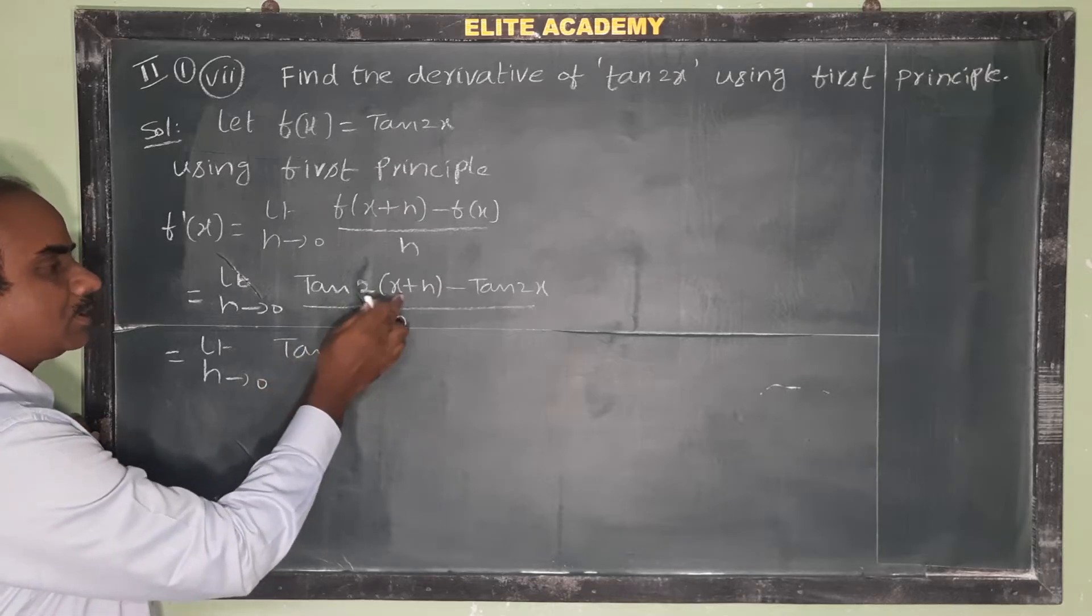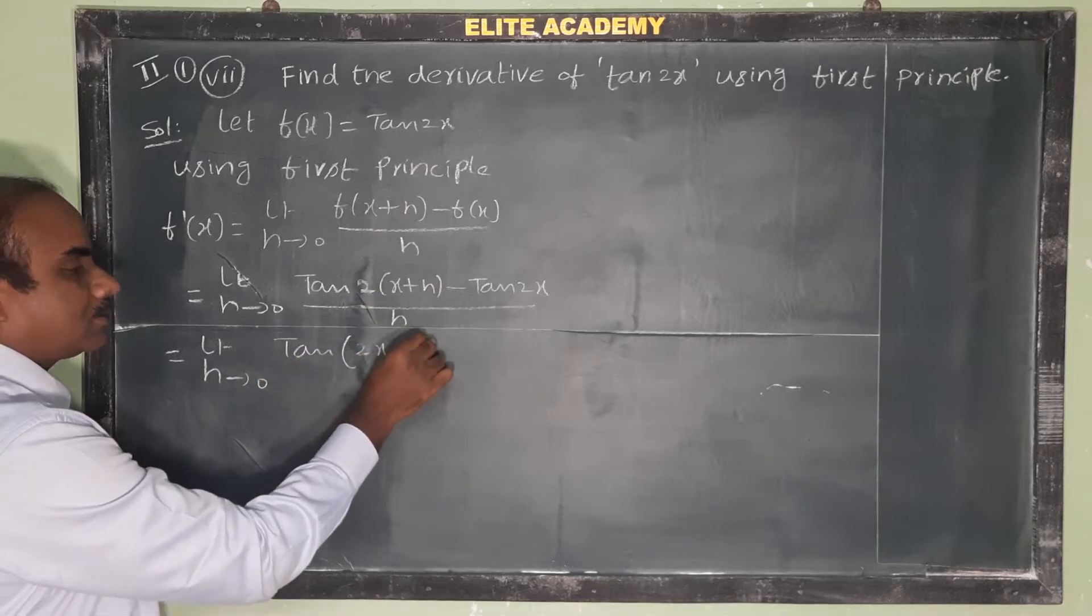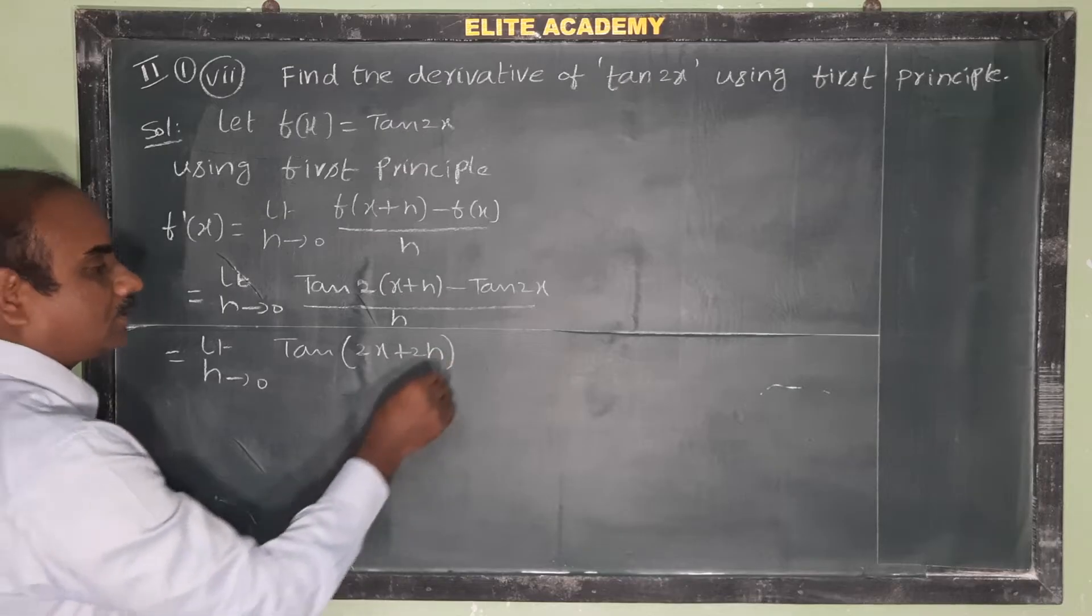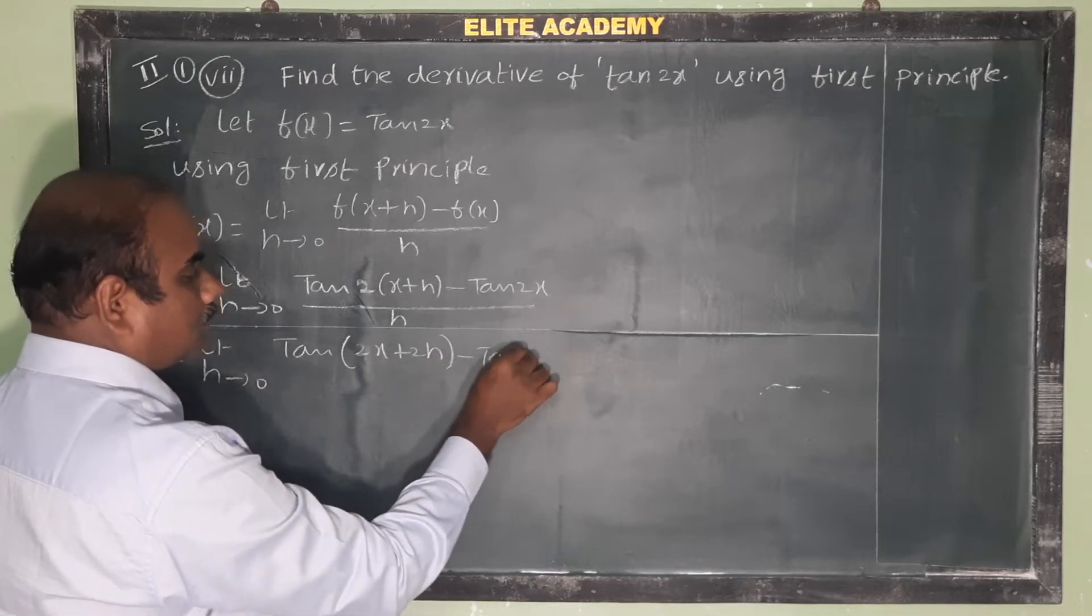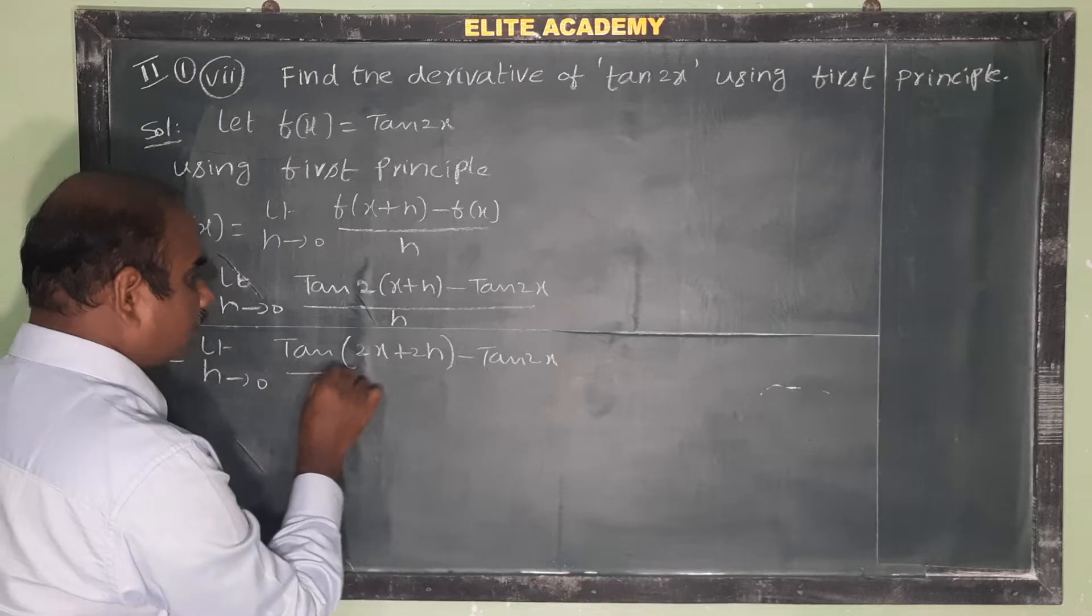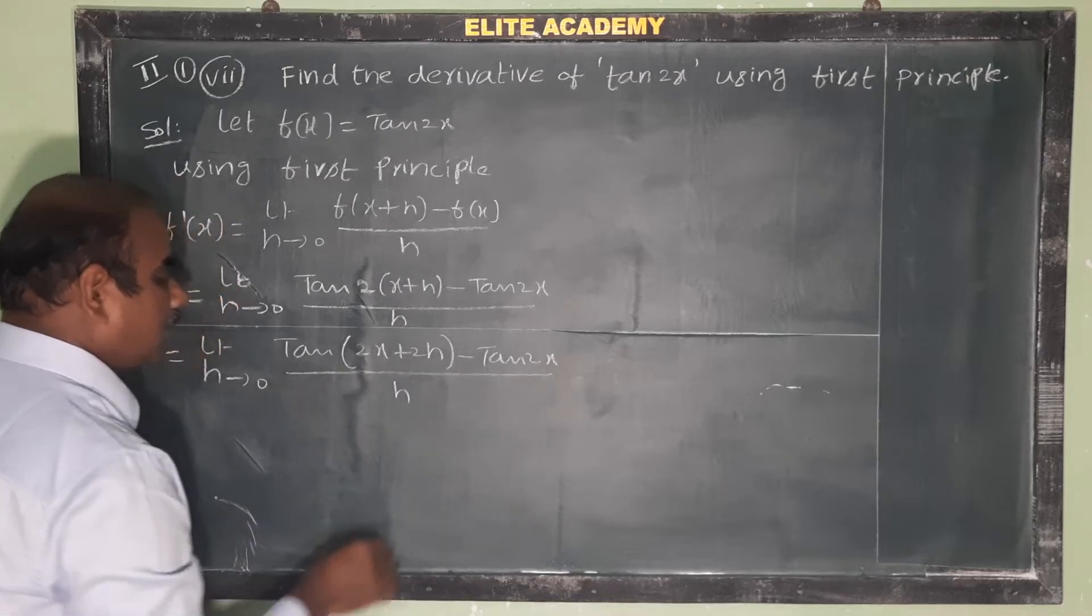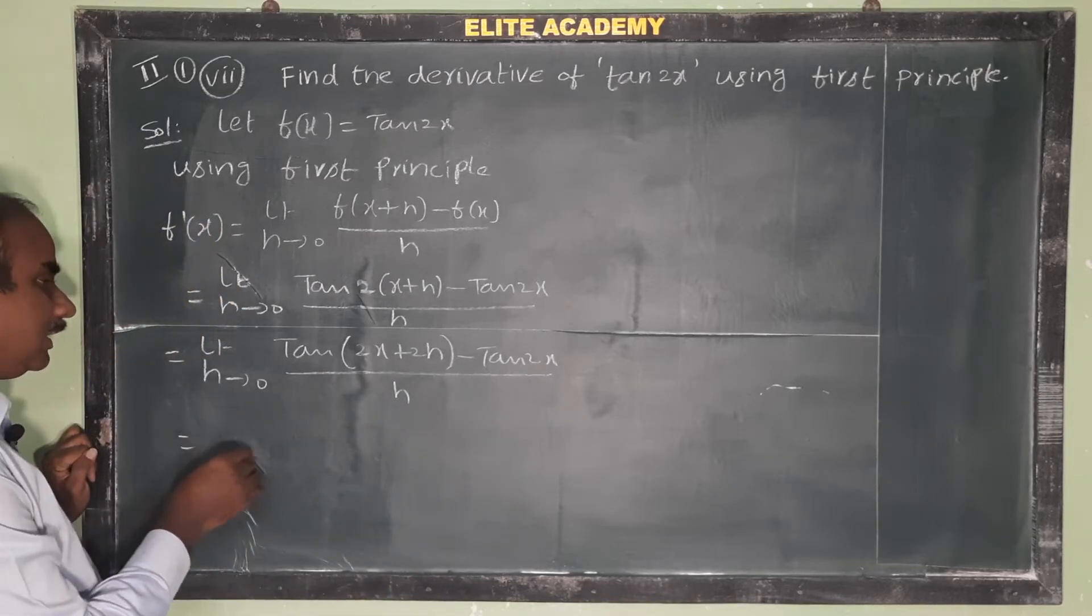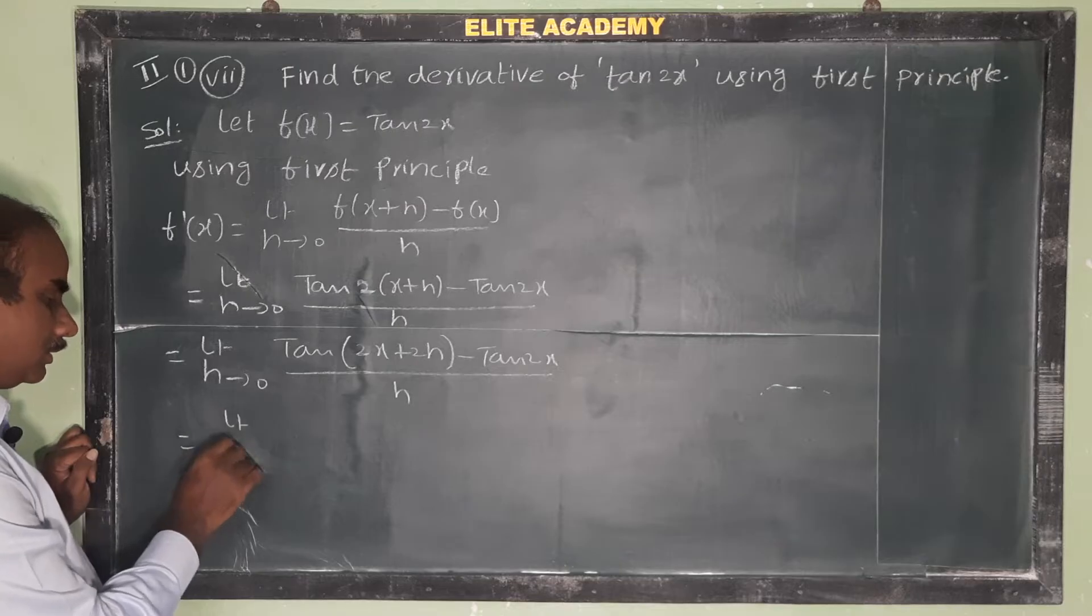Now this equals limit h tends to 0, tan(2x plus 2h) minus tan 2x, all by h.